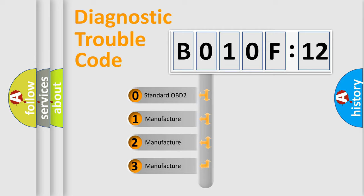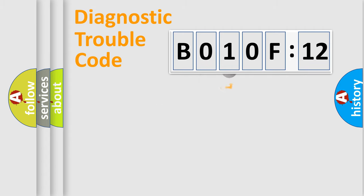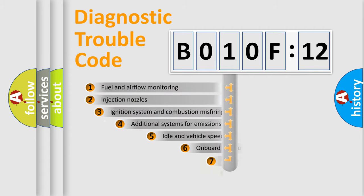If the second character is expressed as zero, it is a standardized error. In the case of numbers 1, 2, 3, it is a manufacturer-specific expression of the car-specific error.